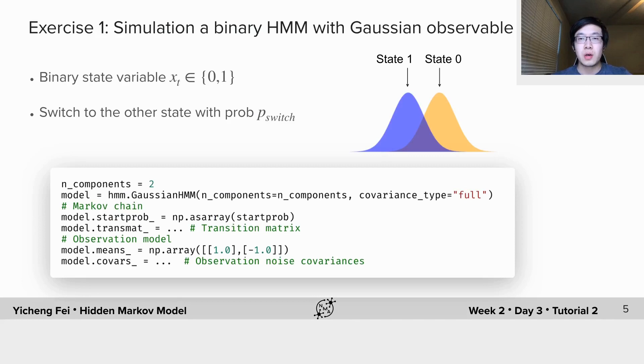In exercise 1, you will build a hidden Markov model with binary latent variable and Gaussian observations. Here is how the model looks like.